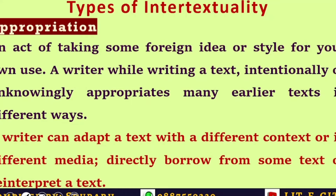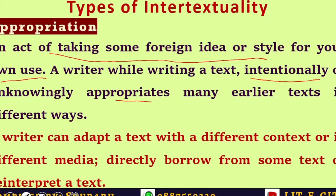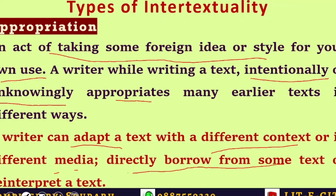A very interesting section is the types of intertextuality. The first type is appropriation — we have discussed appropriation as a post-colonial term, but in this context it is an act of taking some foreign idea or style and making it one's own use. A writer, while writing a text, intentionally or unknowingly appropriates many earlier texts in different ways: adapting a text with a different context or medium, directly borrowing from some text, or through revision or reinterpretation of a text.